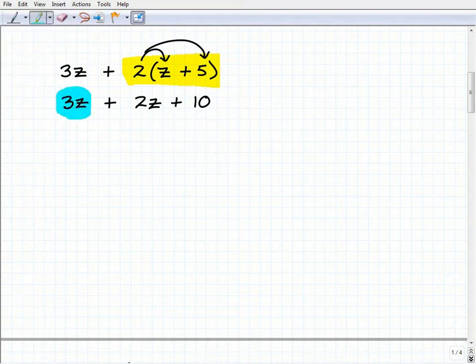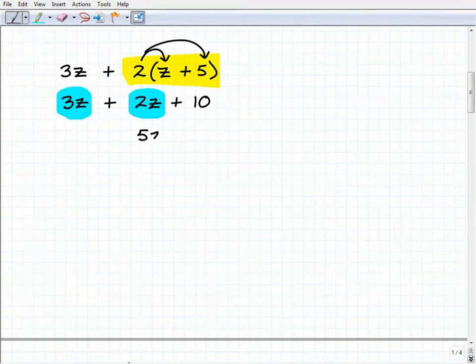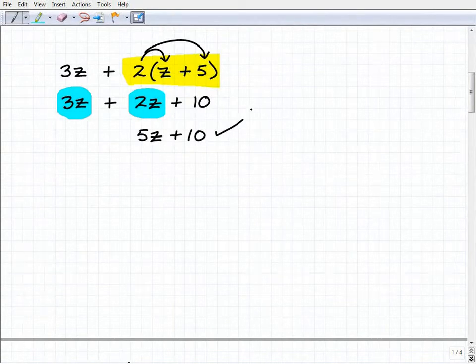I see that 3z and 2z are like, so I can combine them and I get 5z plus 10, and I'm done. Okay, so this is pretty much it.